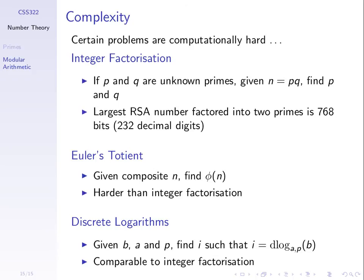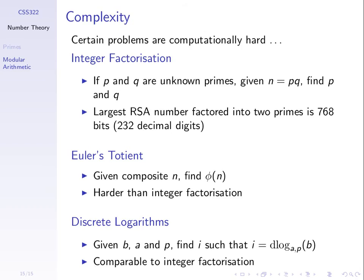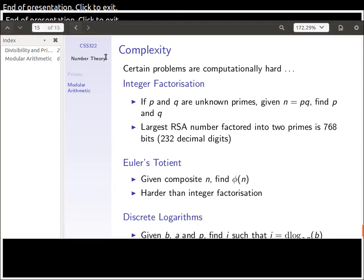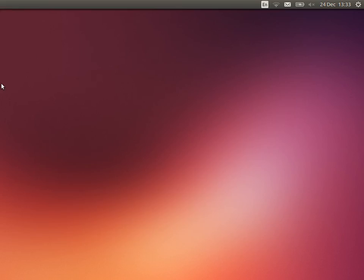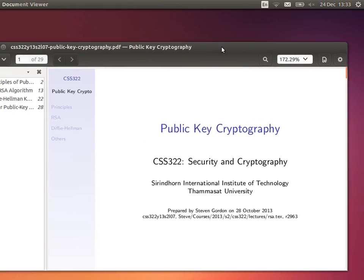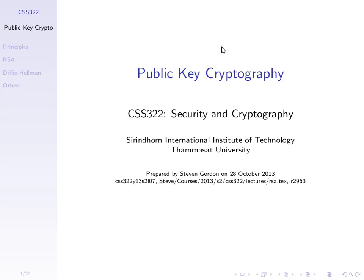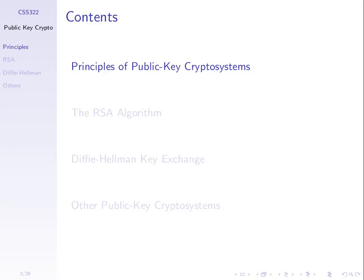We'll come back to these and see how they're used in cryptography — that's our next topic. Any questions before we move away from the theory onto the application in security? Next topic: public key cryptography. All of the security schemes we've seen up until today have been symmetric key cryptography — encrypt with one key, decrypt with the same shared secret key. Now we're moving to a different approach: public key cryptography. Let's look at the principles and then an example.